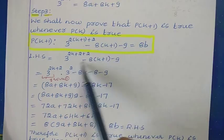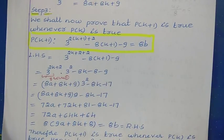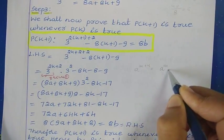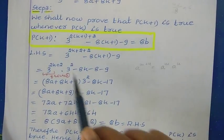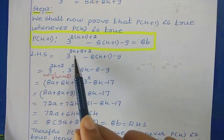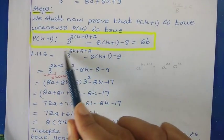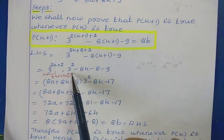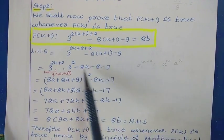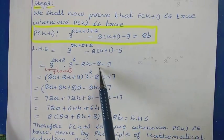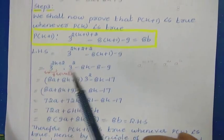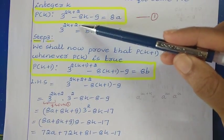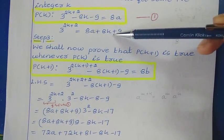Using the exponent rule a^(m+n) = a^m × a^n, I am separating the exponent: 3 to the power 2k plus 2 plus 2 becomes 3 to the power 2k plus 2 into 3 squared. Expanding the remaining terms gives minus 8k minus 8 minus 9. Now this value is already known from our assumption, so we replace 3 to the power 2k plus 2 with 8a plus 8k plus 9.